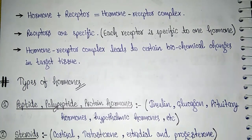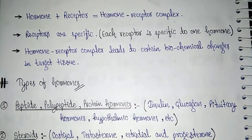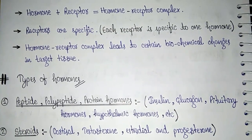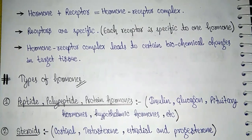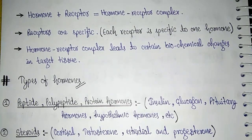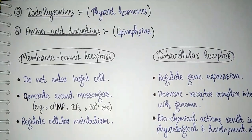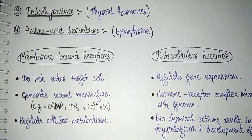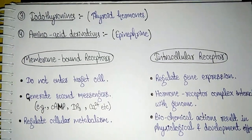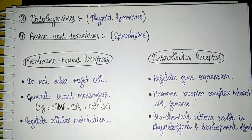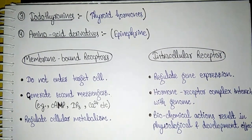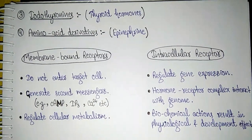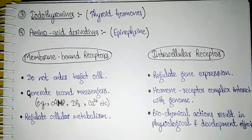Hormone receptor complex hi kya karta hai — ab baat karte hai hormone types ki. Insulin, glucagon, pituitary hormones, hypothalamic hormones etc. peptide hormones mein aate hai. Wahi steroid hormones mein aate hai: cortisol, testosterone, estradiol and progesterone. Steroid hormones kaisi hoti hai — lipid soluble. Iodothyronines hote hai — thyroid hormones, iodine containing hormones: tetraiodothyronine and triiodothyronine. Next hota hai amino acid derivatives, jismein aata hai epinephrine. Ab toh do tarah ke receptors hain — membrane bound receptor and intracellular receptor.